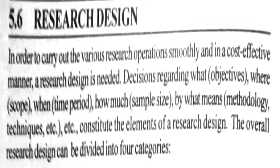constitute the elements of a research design. The overall research design can be divided into four categories: 1. the sampling design, 2. the statistical design — the sample size and the type or method of sampling to be adopted, 3. the observation design, and 4. the operational design, i.e., the specific details by which the procedures in 1, 2, and 3 above are to be carried out.